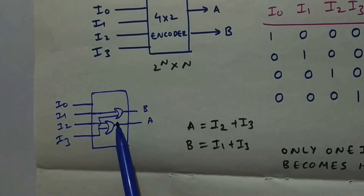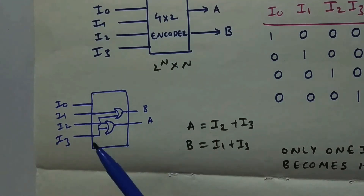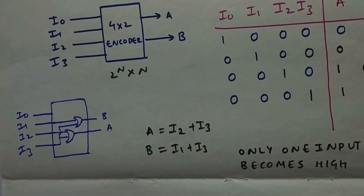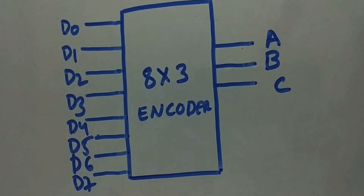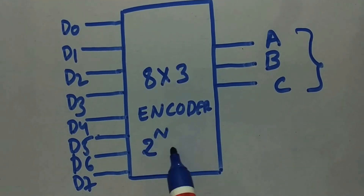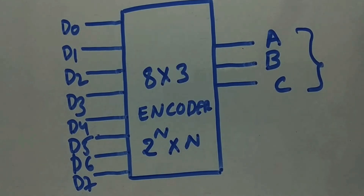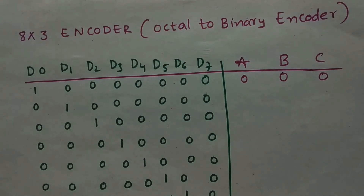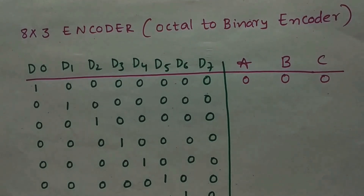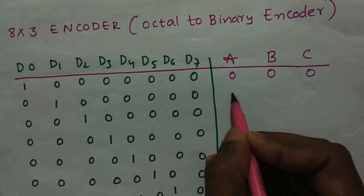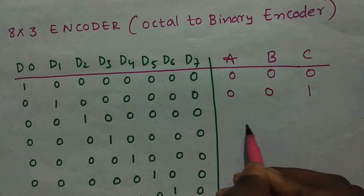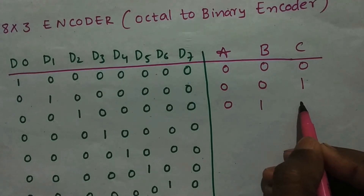Now let's look at the gate diagram — these are the two OR gates inside the encoder block. Moving on to the 8×3 (octal to binary) encoder for a better understanding of encoder design. This encoder has 8 inputs D0 to D7 and 3 outputs, since 2^3 = 8. Looking at its truth table, again only one input is high at a time.